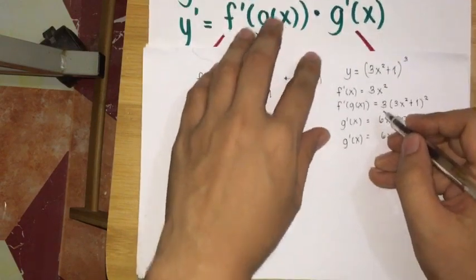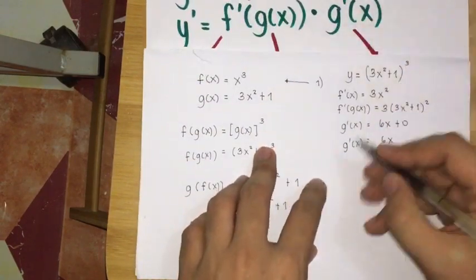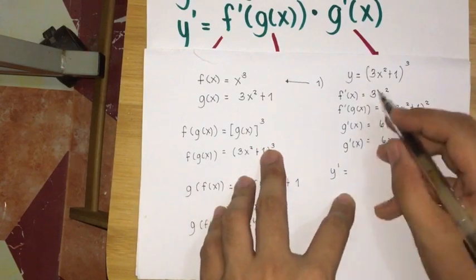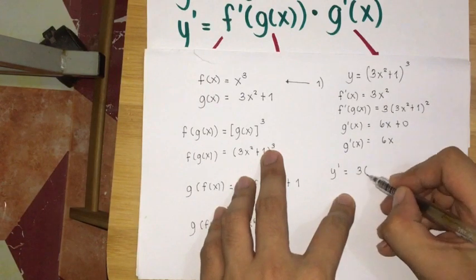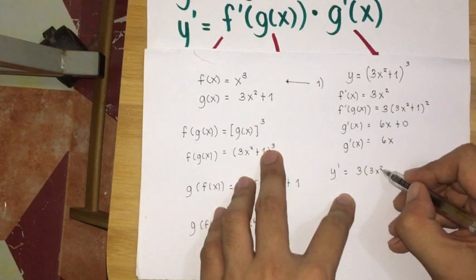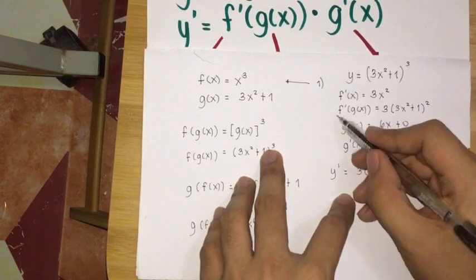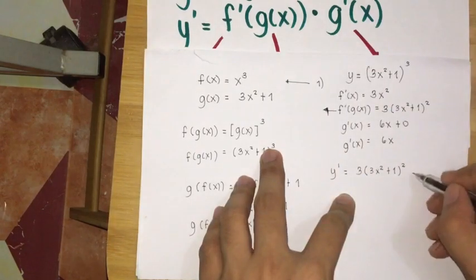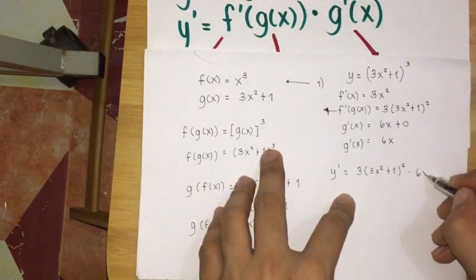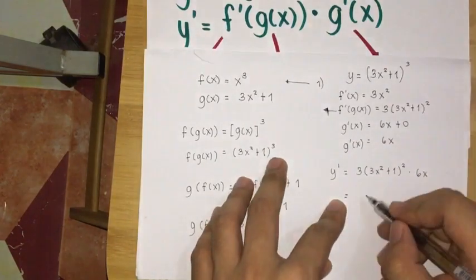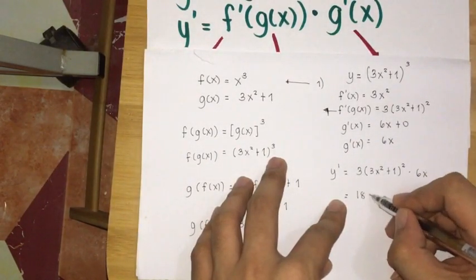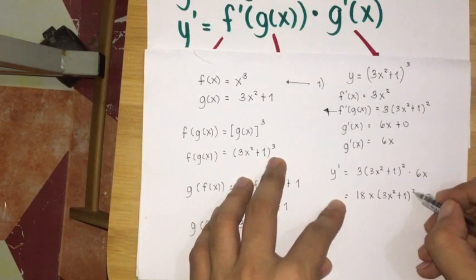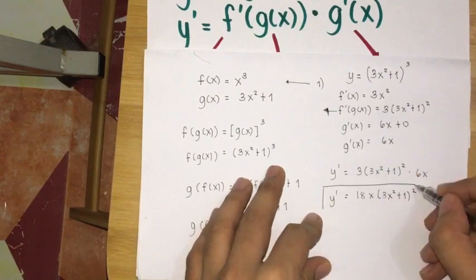Applying the chain rule formula, the derivative of y = (3x² + 1)³ is 3·(3x² + 1)² times g'(x) which is 6x. Simplifying, 3 times 6x gives 18x, so y' = 18x·(3x² + 1)². This is our final answer.